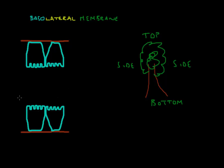For instance, here we have epithelial cells lining the duodenum, so part of the gastrointestinal tract. Looking at the picture from the way you are sitting, it may be easy to say that this is the top and this is the bottom, but the question is where is the top and bottom of the cells here — and you can see that that is not that obvious.